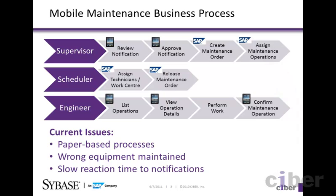Now we see the business processes we will deal with in this scenario. There are three roles, indicated by the dark purple chevrons. The first is the supervising engineer. There is a bit of jargon at this point — for example, the concept of the notification in asset management. This is the message that is created by the maintenance engineers when they notice that a piece of equipment is damaged or needs additional maintenance.